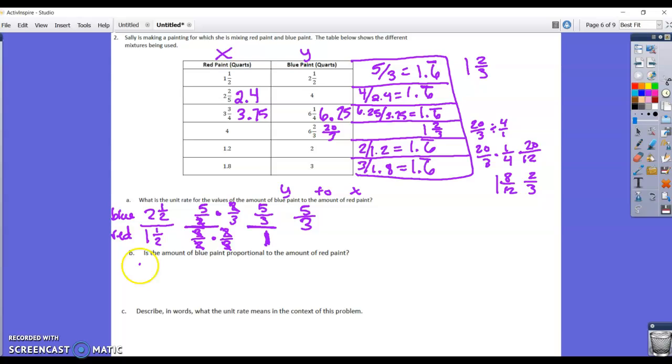So is it proportional? Yes. There is a constant, y divided by x, which is equal to 1 and two-thirds. We'll keep that short since we have all of that work up there shown. Describe in words what the unit rate means in the context of the problem. So the fact that we use the blue and the red at the top is what's going to be helpful with us there. So blue at the top, red at the bottom. Blue was five-thirds.